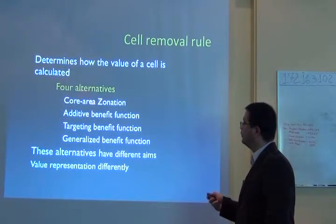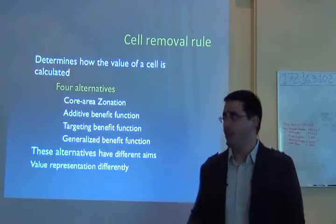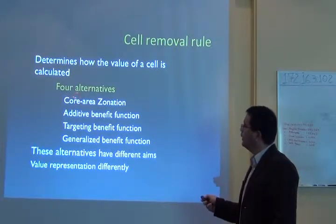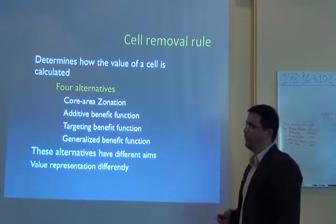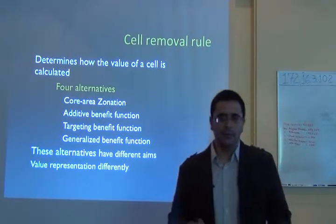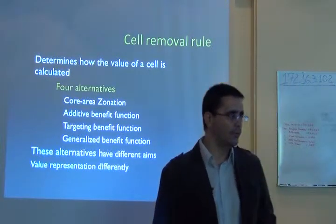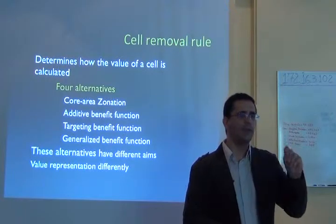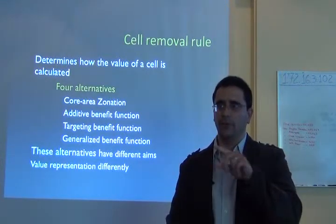Zonation allows you to do this by four different ways. I will focus on the two first ones: core area zonation and the additive benefit function. These are ways to calculate marginal loss — a way to define the actual value of species contribution to the whole system.